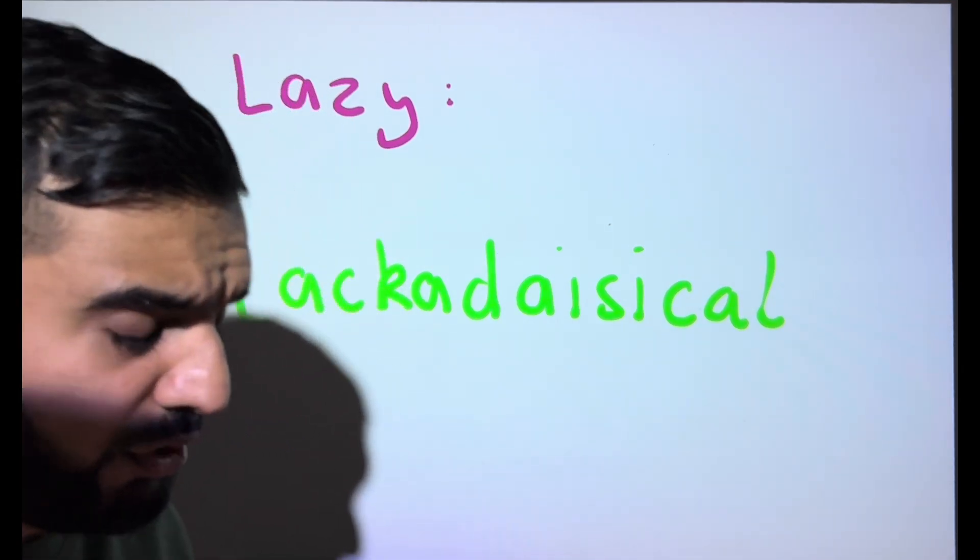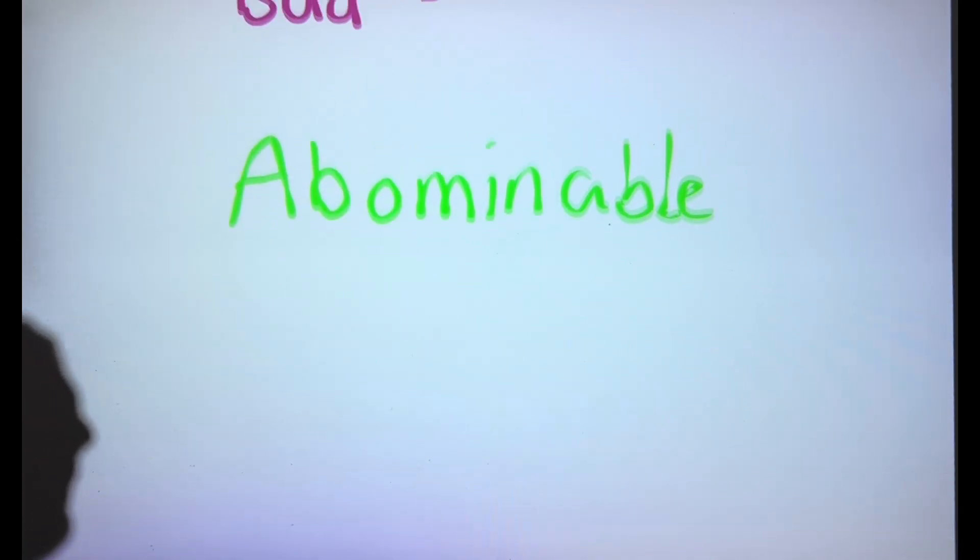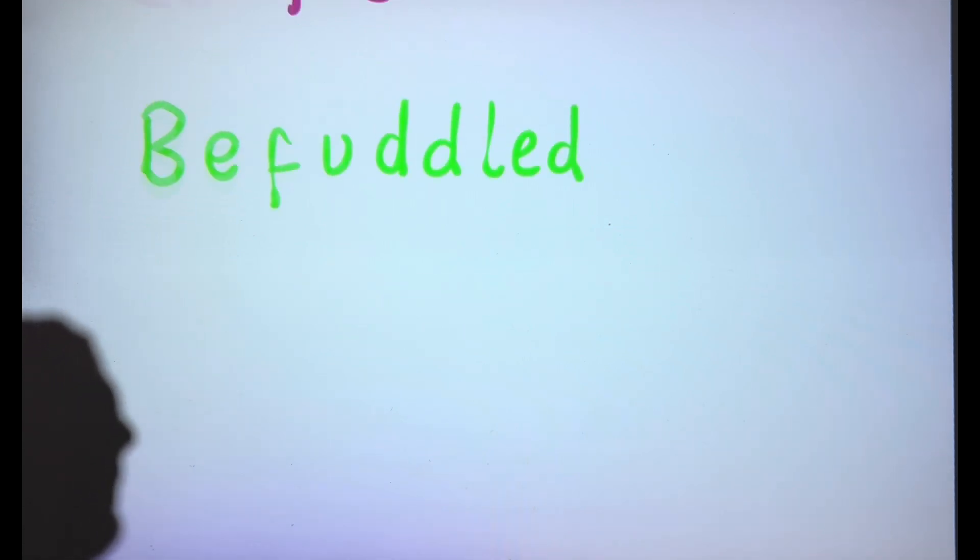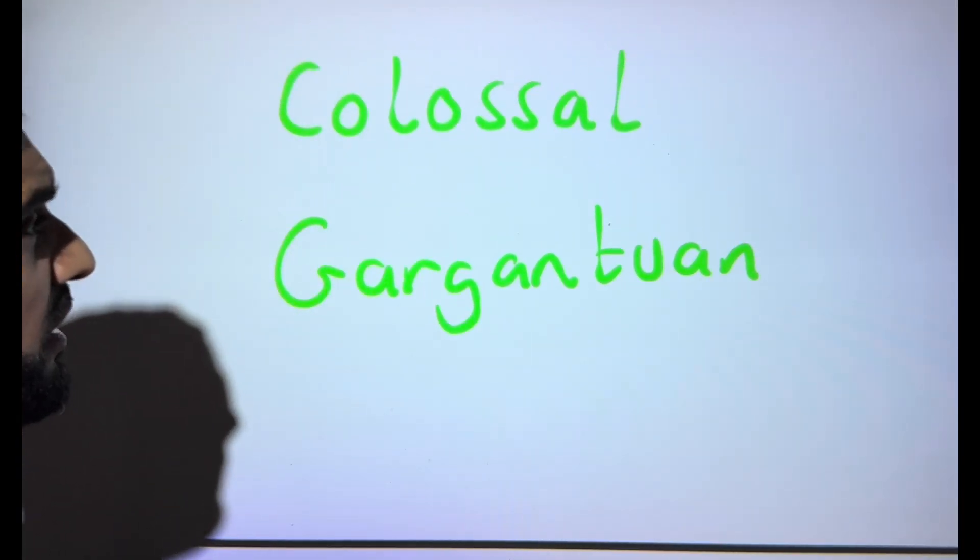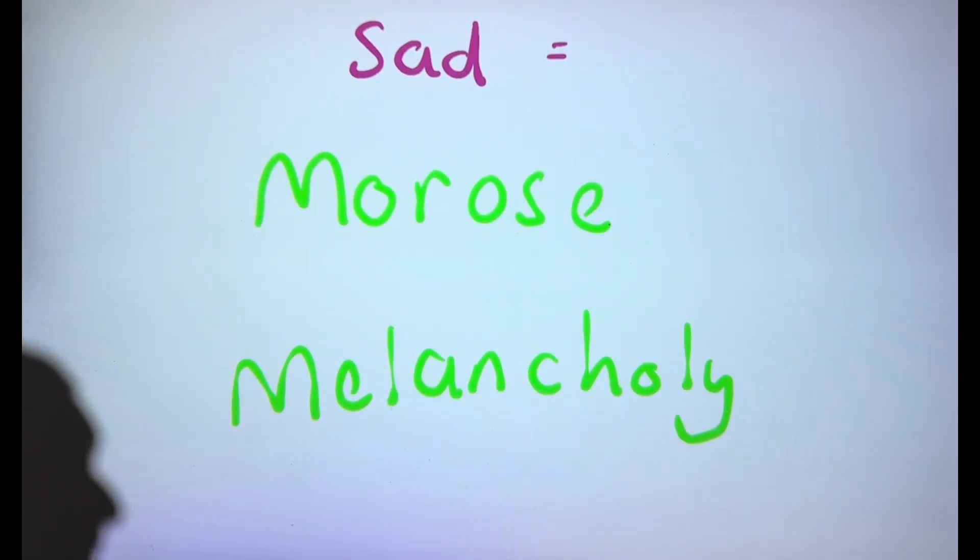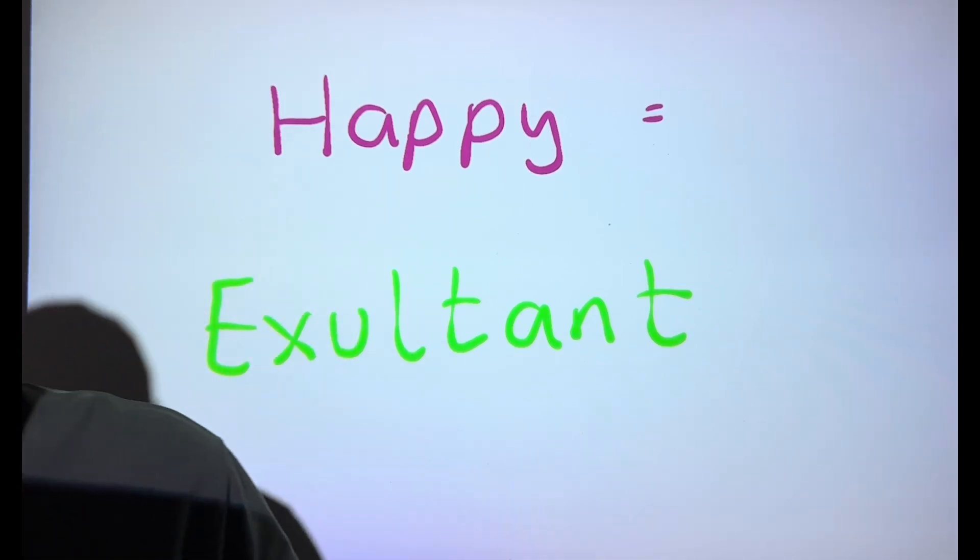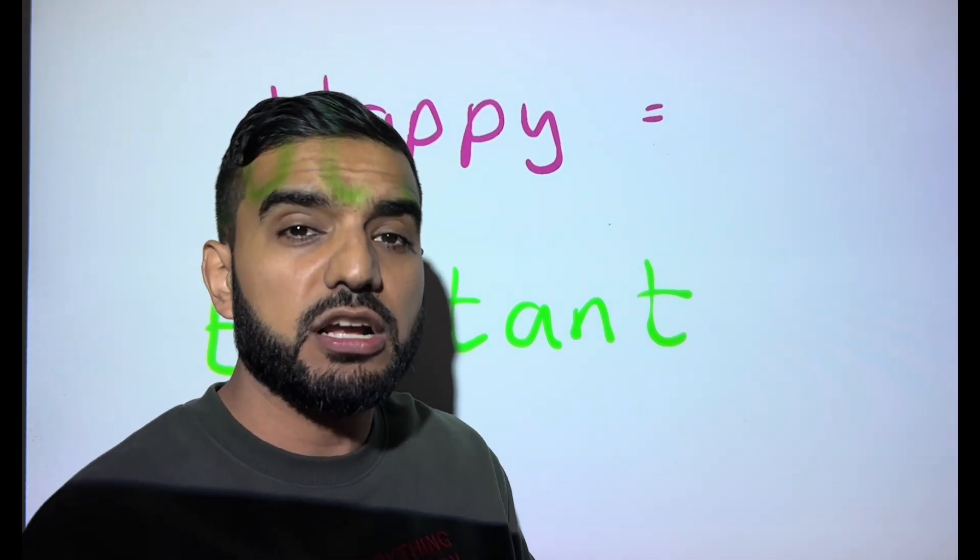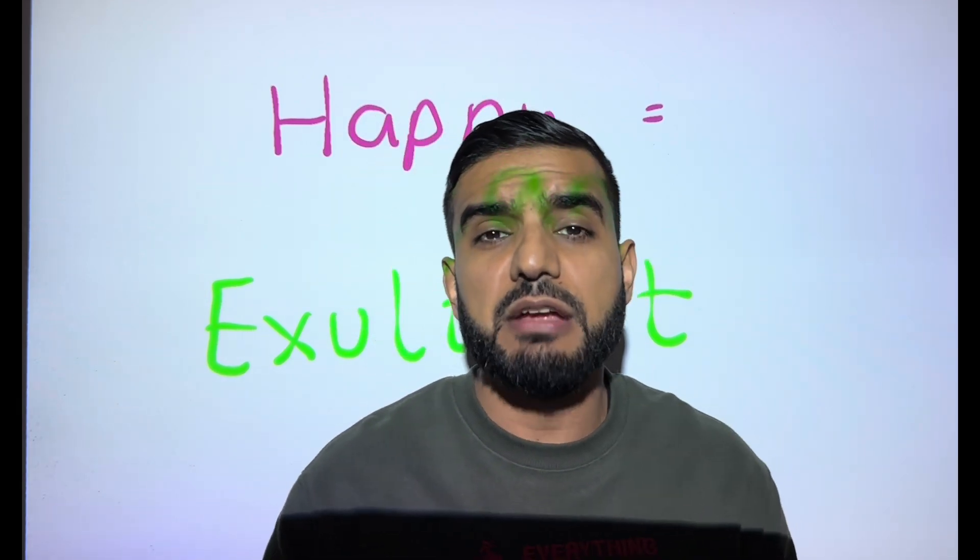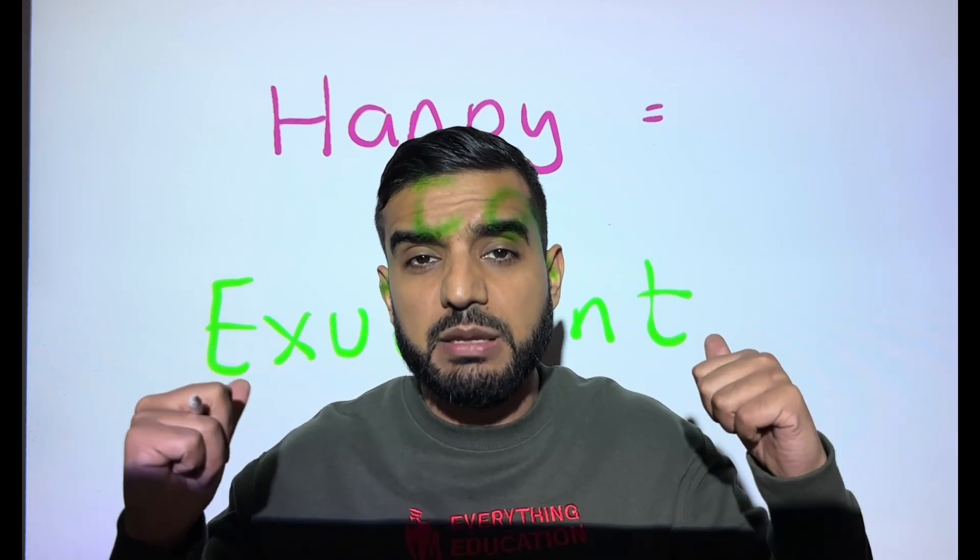When it comes to vocabulary, let's do a quick recap. You've got the word lackadaisical, you've got the word exasperated, abominable, malevolent, paradoxical, befuddled, gargantuan and colossal, indignant, morose and melancholy, and the word exultant. These words are all you need when it comes to your vocabulary.